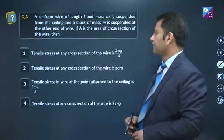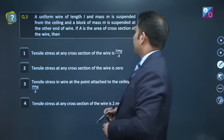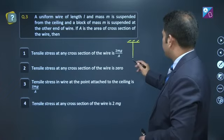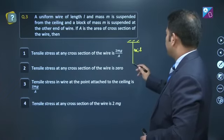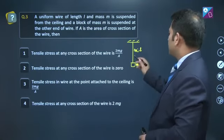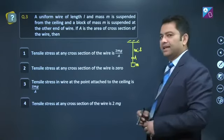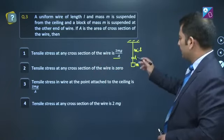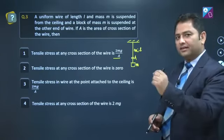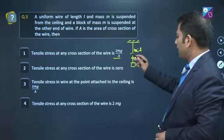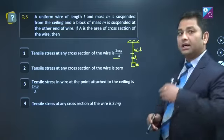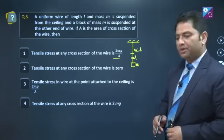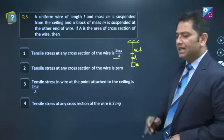Question number 3: A uniform wire of length l and mass m is suspended from the ceiling, and a block of mass small m is suspended at the other end. According to the statement, there is a rope of mass m, length l, and a block of mass m hanging. Cross-sectional area is A. Let's see - tensile stress at any cross-section of the wire is 2mg/A. This is wrong, because at every cross-section, the weight of the rope included will change. Like, in the middle you'll see half the weight of the rope. At the top you'll see the complete weight of the rope. Of course, this weight will be there. But what I mean to say is that for different segments, different weight of the rope is included. Because of this, at every cross-section, tension/A value will not be the same.